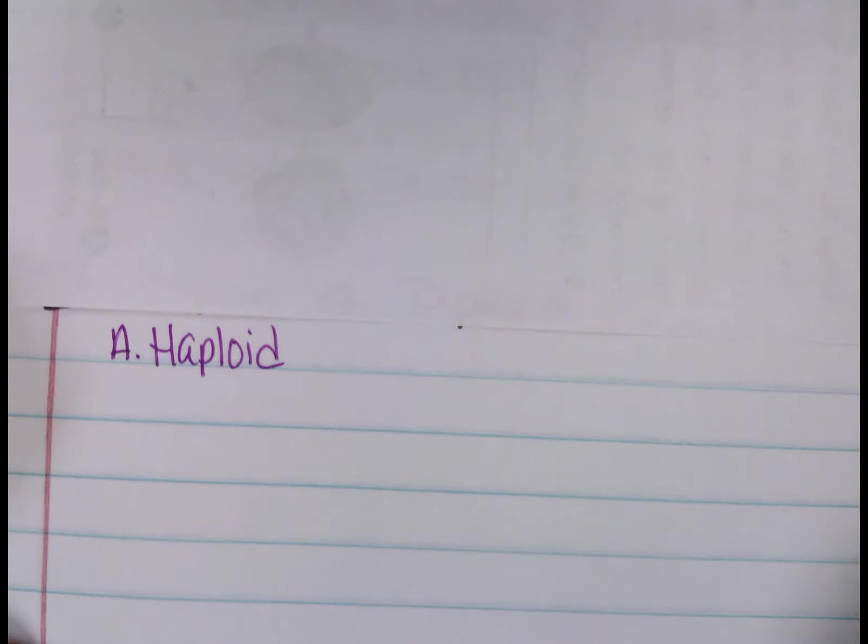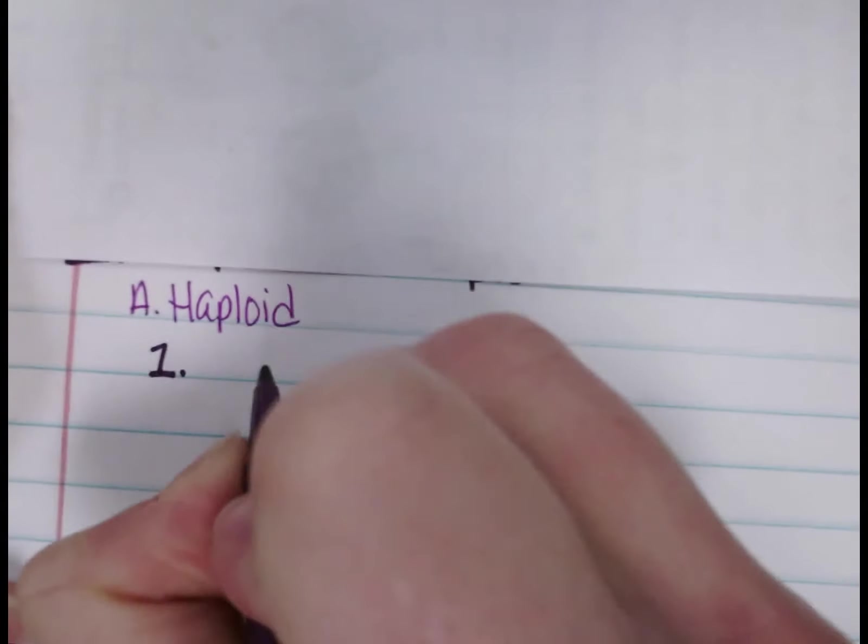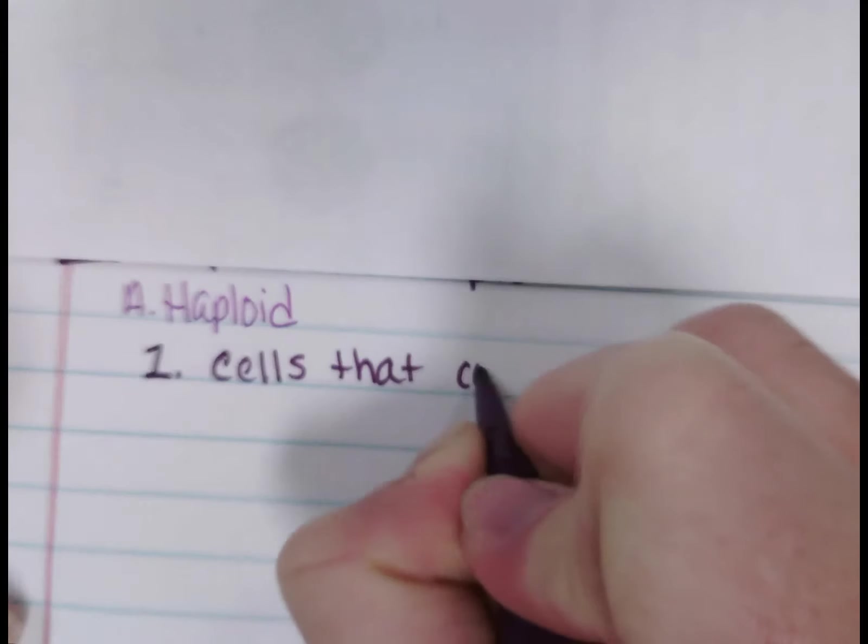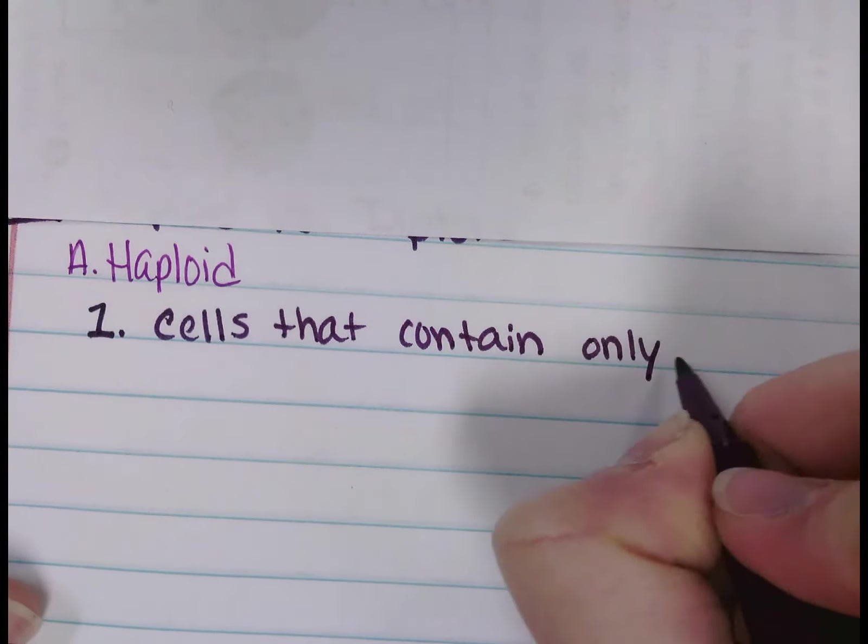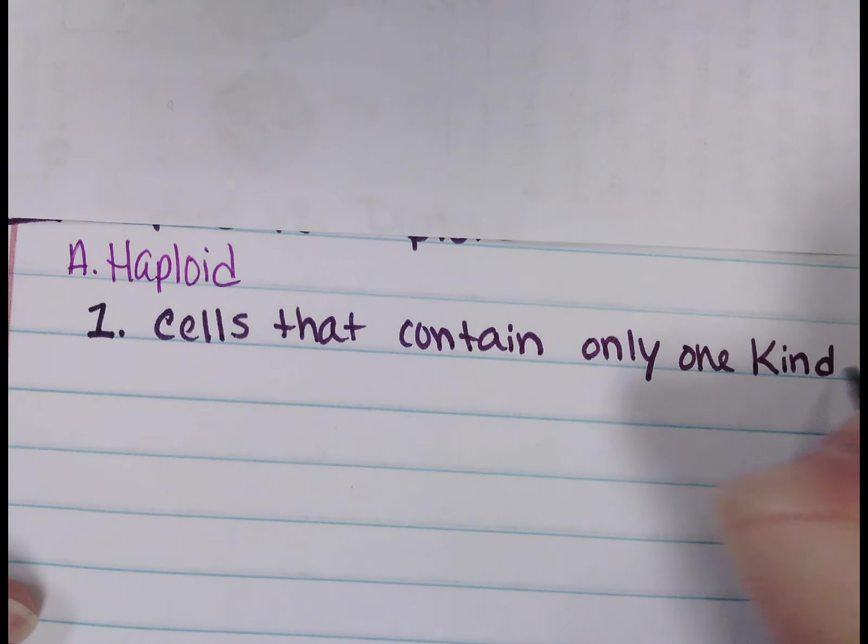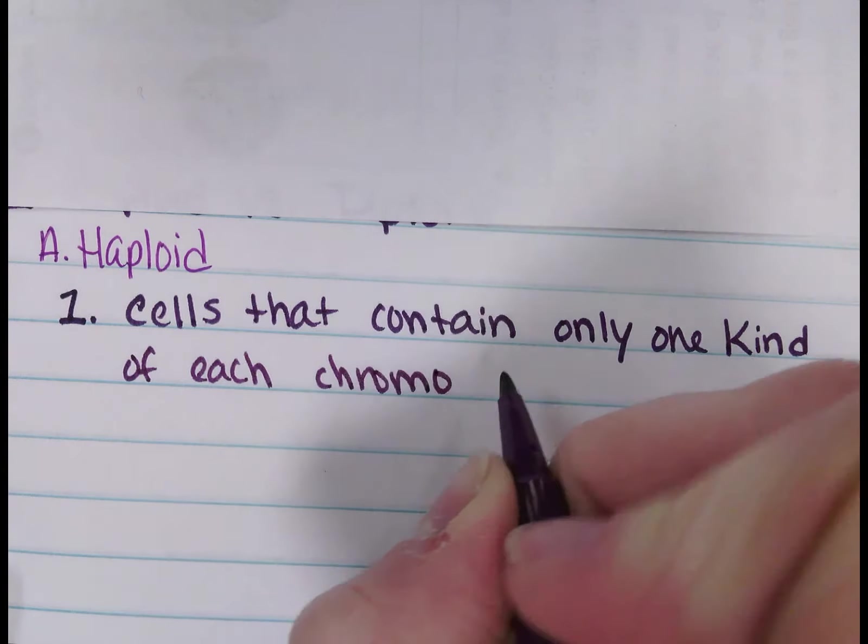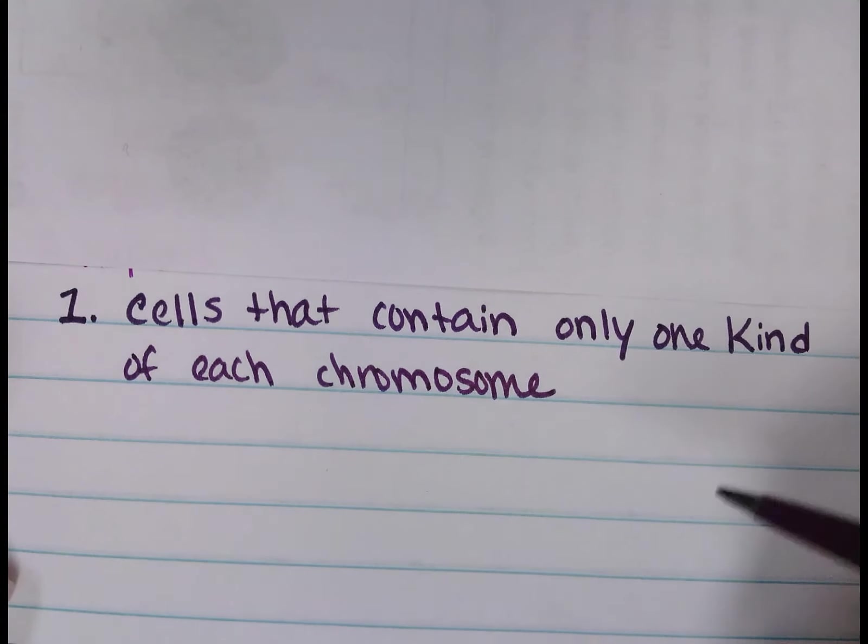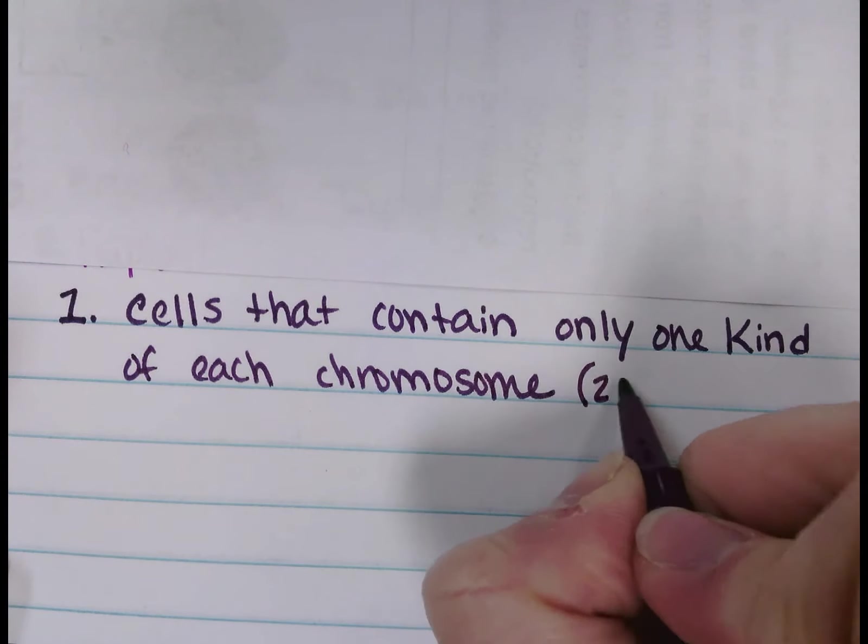So haploid. Haploid is half. How do I remember that? Well, HA and HA, they both start with HA. Haploid cells are cells that contain only one kind of each chromosome.